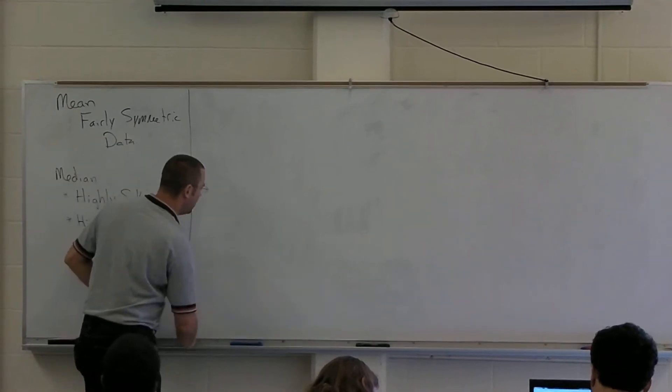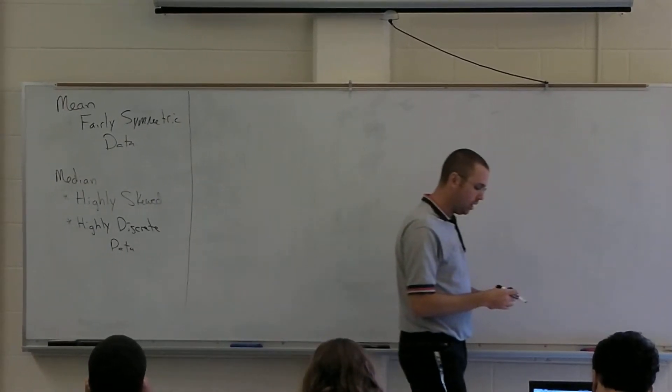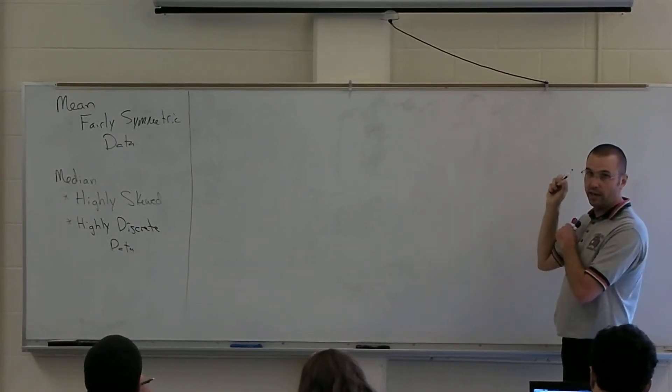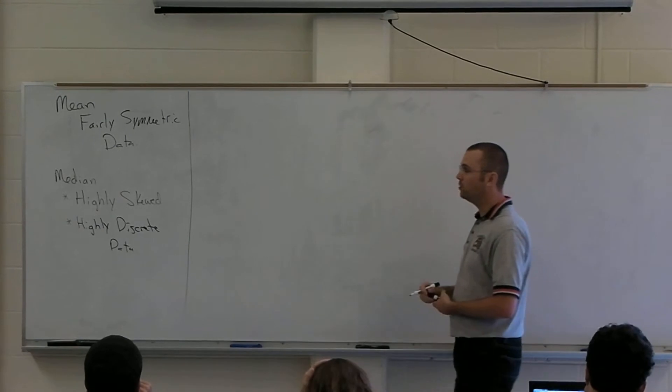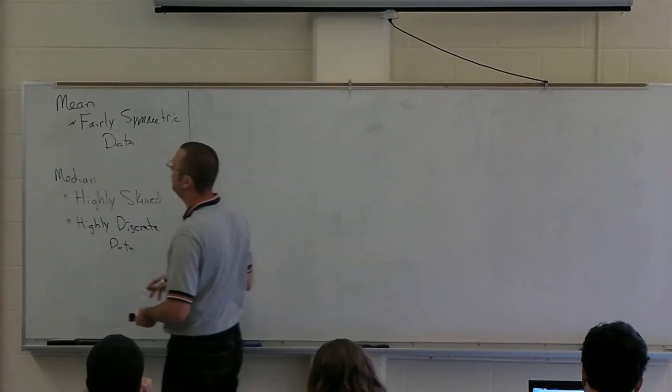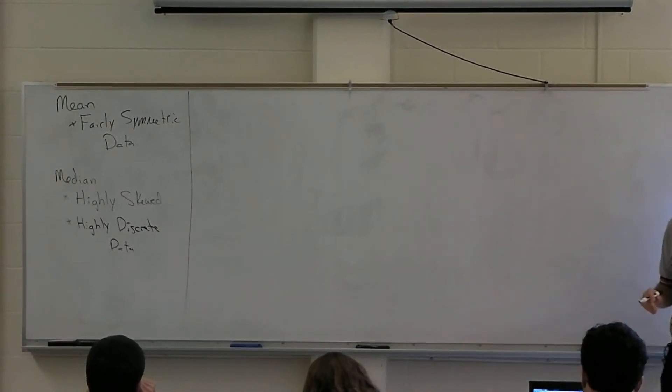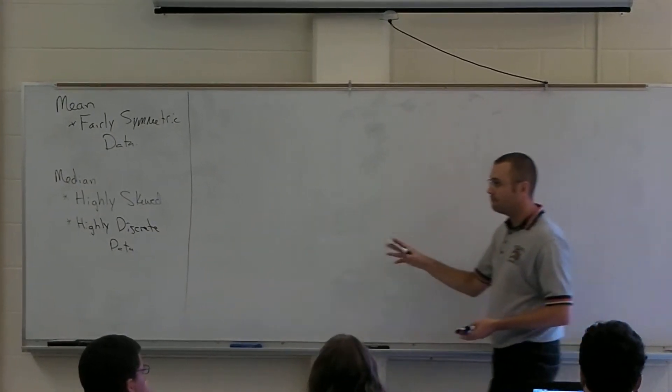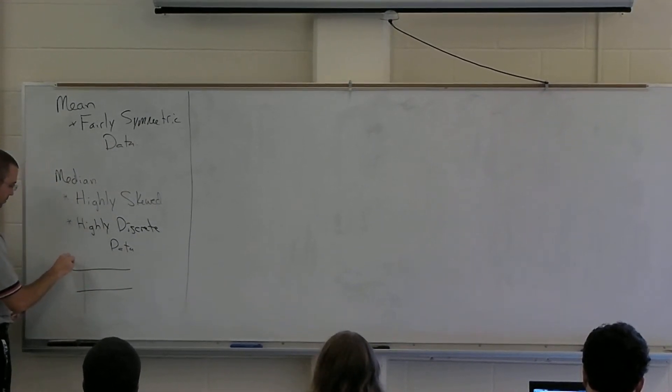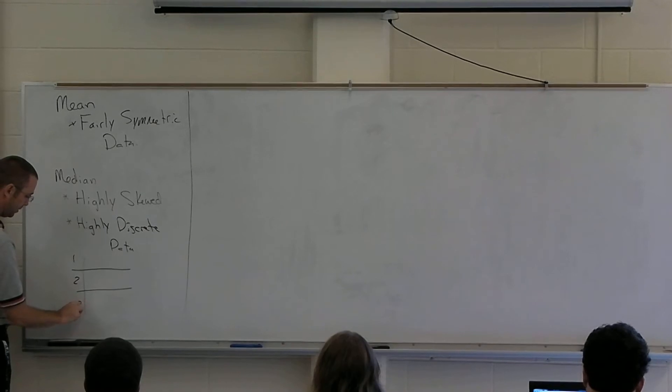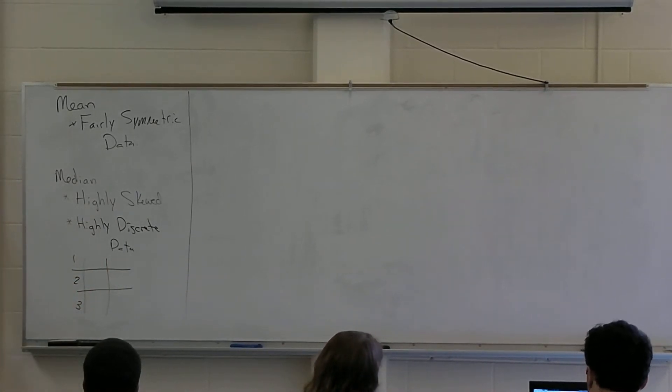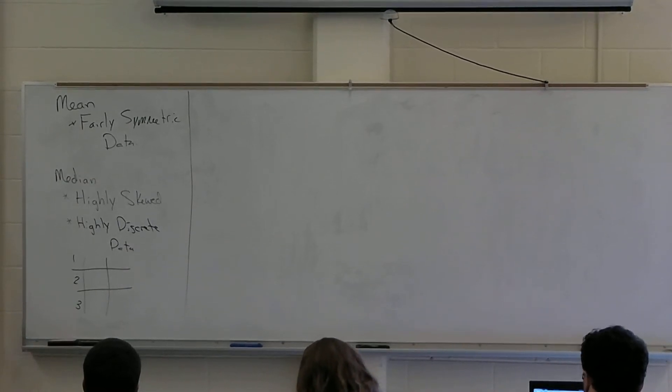And we also looked last time at sort of the picture that we get when we have a distribution and how the mean and the median behave when you have skewed data, when you have symmetric data and such. So make sure you recall those pictures. It's not highly discrete, that was like the one where we had the 0, 1, and 2, right. Highly discrete when there's only a few options, maybe something like this, and you have high frequency in each category. The median there is better than the mean typically.